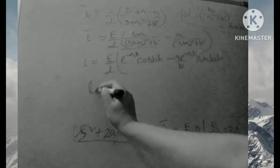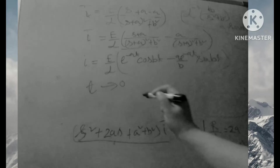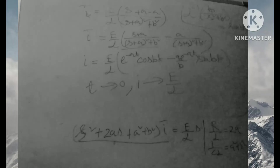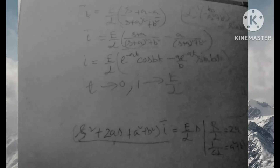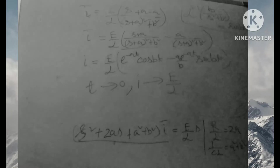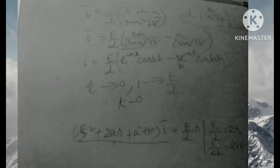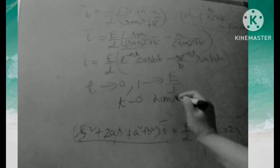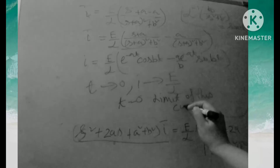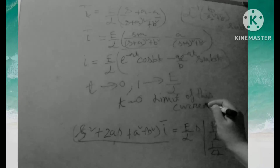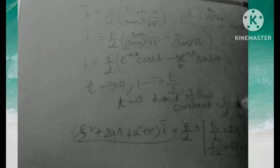Taking the limit as T tends to 0 according to the question, I tends to E/L. So although the current equals 0 initially, a large current will develop instantaneously due to the impulsive voltage applied at T = 0. The limit of the current is E/L, and that is the final answer.